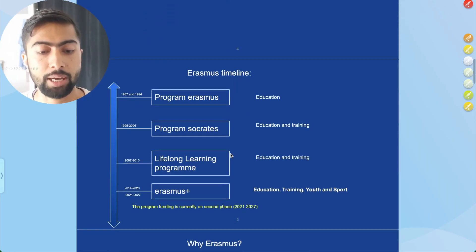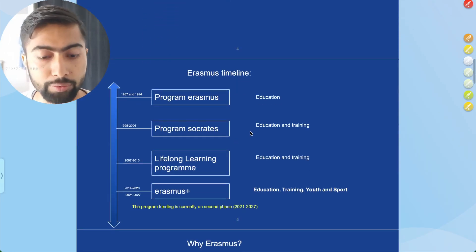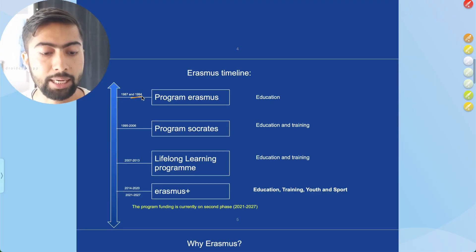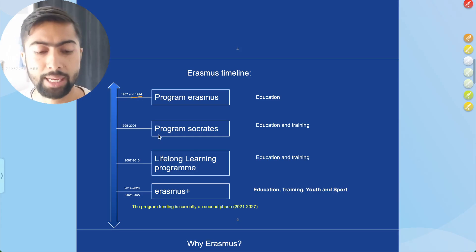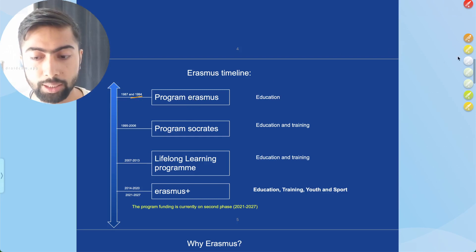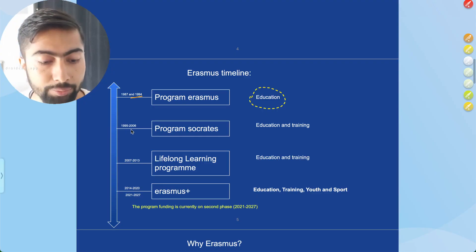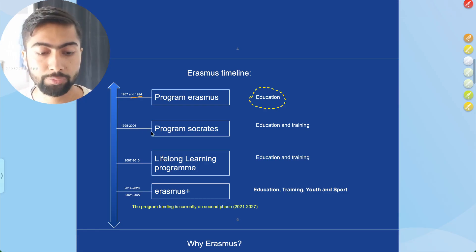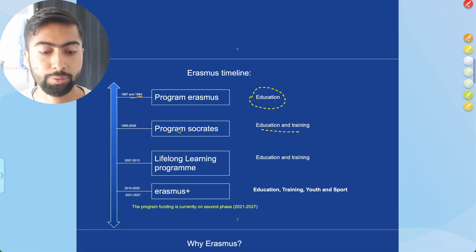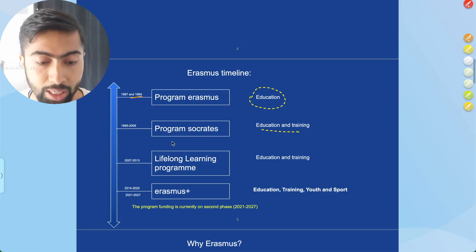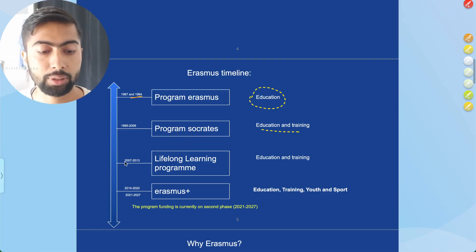Looking at the timeline of the Erasmus program and how it grew over time: it was initially started in 1987 and ran until 1994, focused mainly on education. From 1995 to 2006 a similar program focusing on education and training was named the Socrates program. Then from 2007 to 2013, another program called the Lifelong Learning Program focused on education and training.